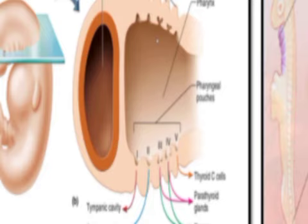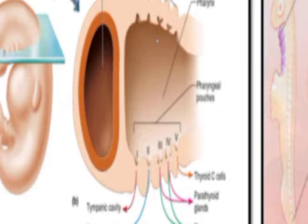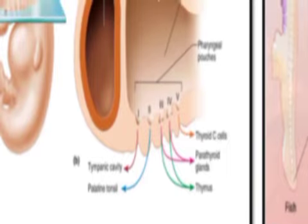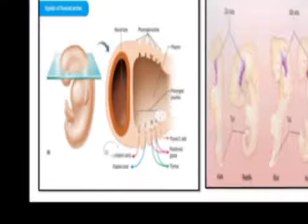The arches are responsible for forming jaw and cartilage structures — the inner skeletal system, like the jaw, jaw muscles, and jaw bones. The pouches are responsible for making the endocrine system and other parts.